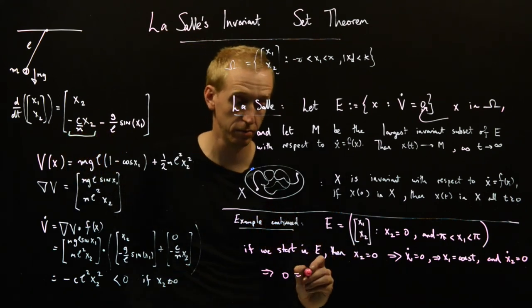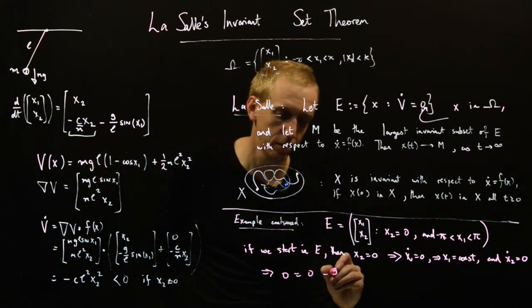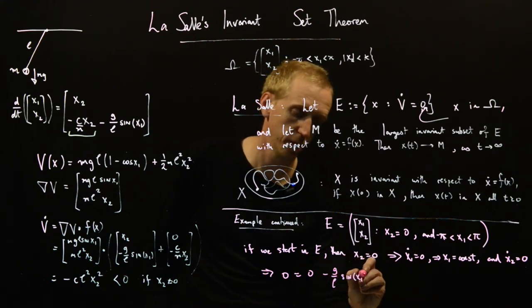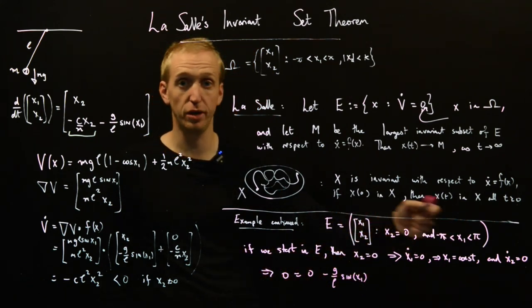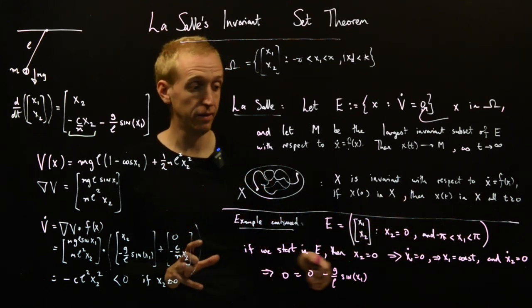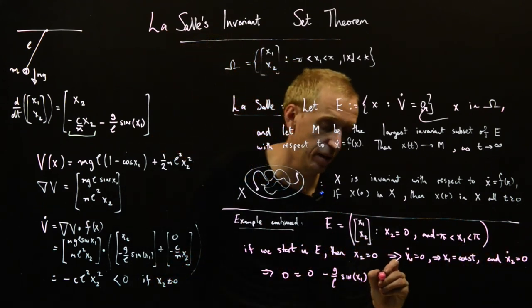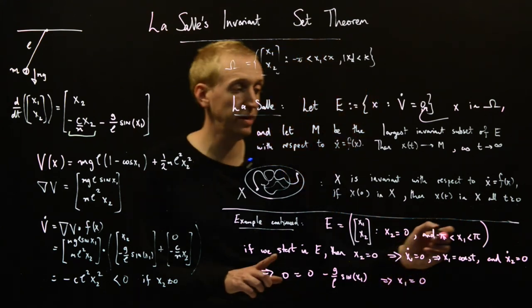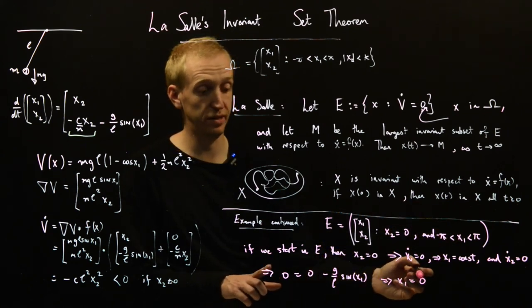But x2 is equal to zero. And then this thing we have minus G over L sine x1. So this is the consequence of initializing our system in this set E. If we're going to stay in E, these must hold, which means this must hold. But this implies that x1 is equal to zero. The only remaining point in E where this relationship holds is when x1 is equal to zero.